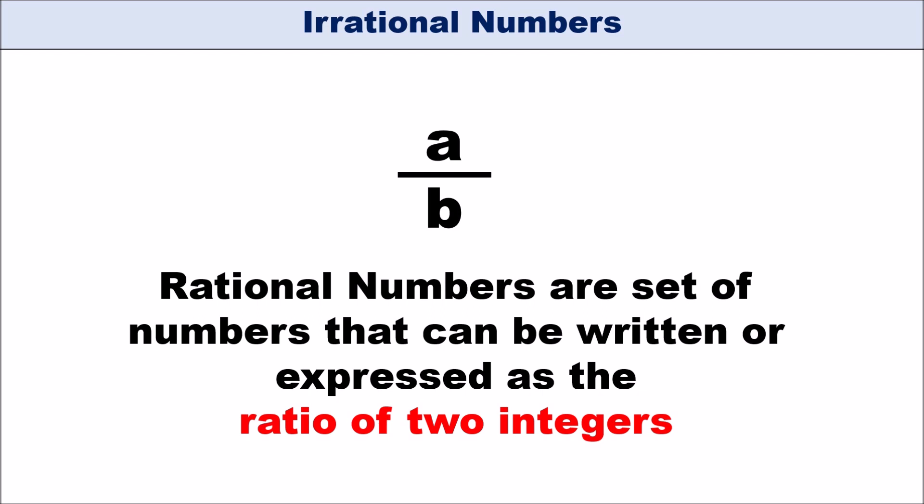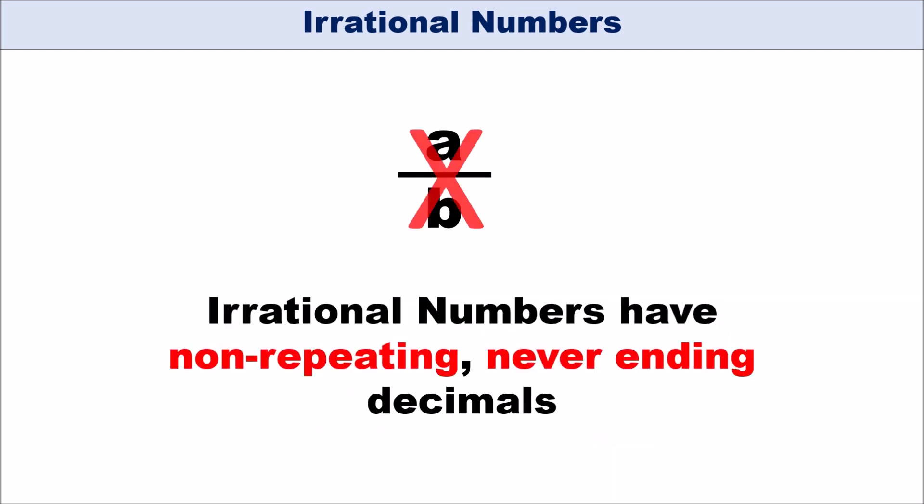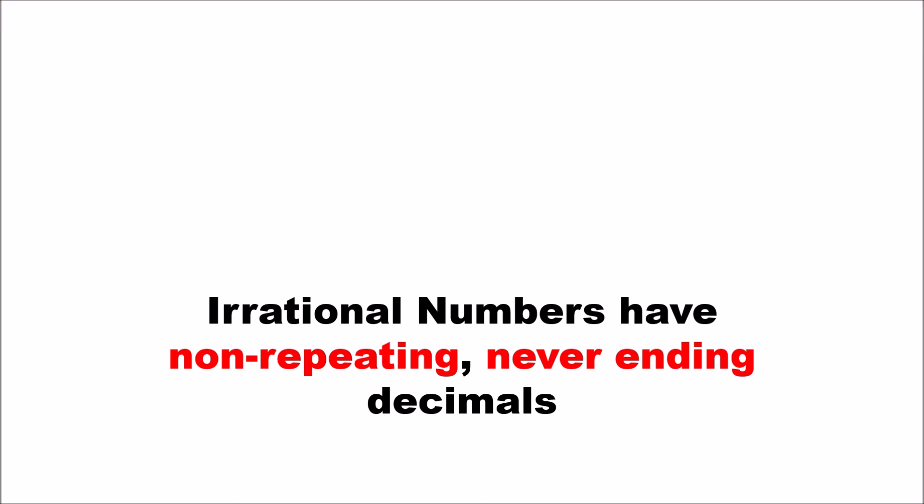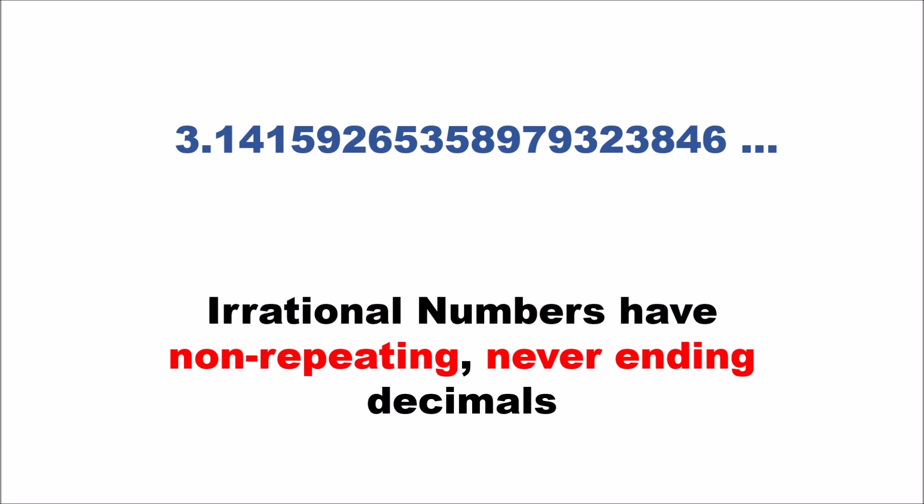Irrational numbers are numbers which cannot be expressed as a ratio of two integers, and they have non-repeating, non-ending decimals. A good example is pi — 3.14159... — the three dots at the end mean the decimals keep going and never repeat. Because you cannot express pi as a fraction, it is an irrational number.